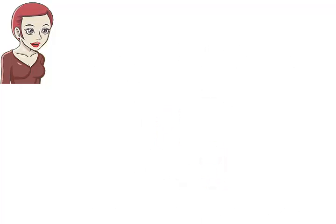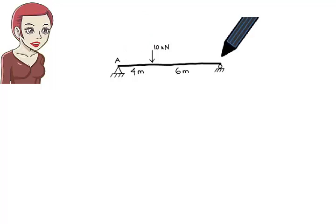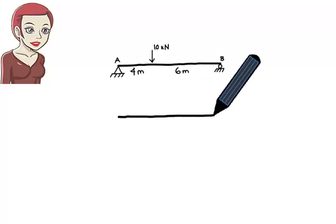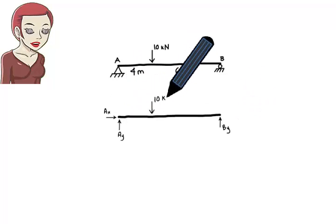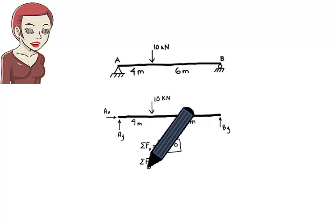Let's go through this process using a simple example. Consider the simply supported beam subjected to a concentrated load of 10 kN. The load is applied 4 m away from the left end of the beam. We wish to formulate the shear and moment equations for the beam. Step 1: Find the support reactions. This involves drawing the beam's free body diagram, formulating the equilibrium equations for the entire beam, then solving them for the unknowns.